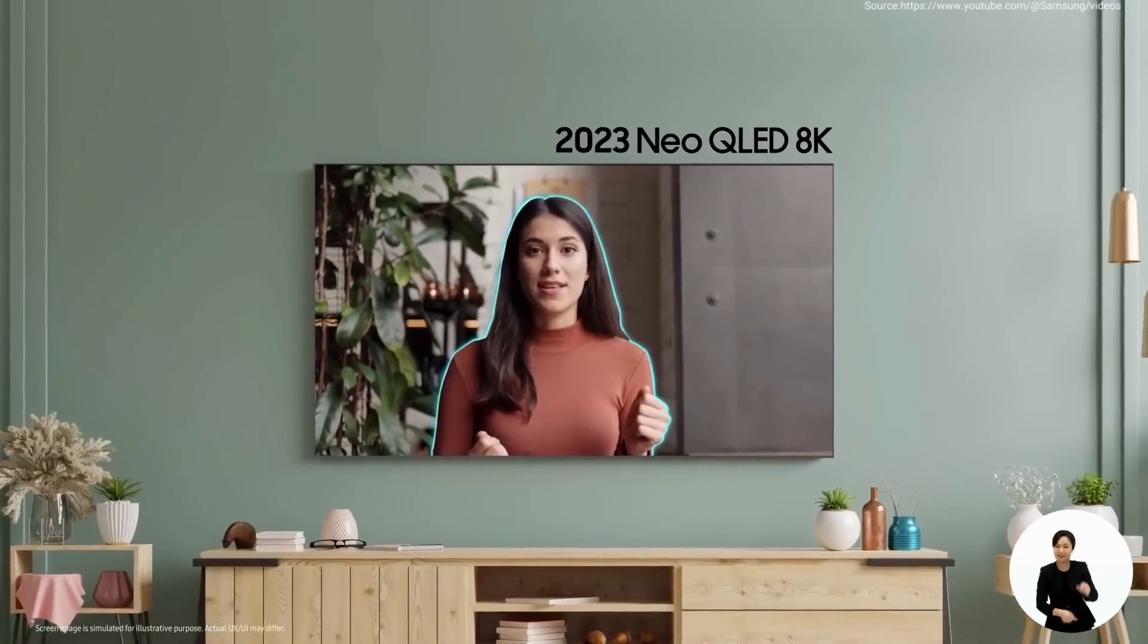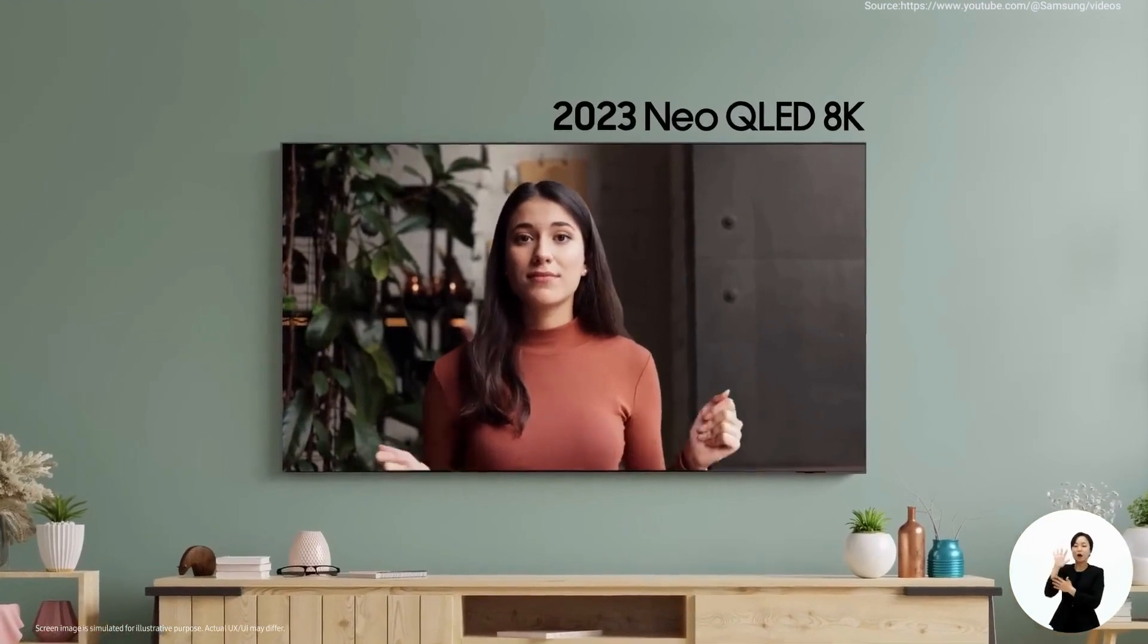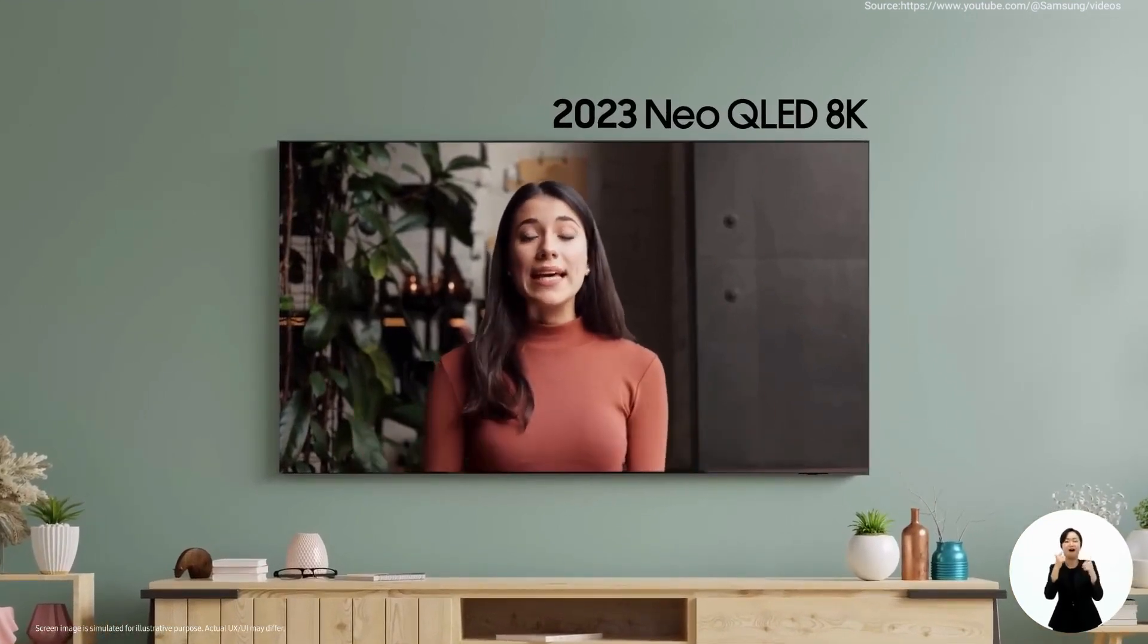We also develop features to help you save electricity while watching TV. AI Energy Mode can even analyze the content playing on the screen and separate the main subject from the background with AI technology to distribute light accordingly. For example, background trees will be dimmed while keeping the main character bright. This helps reduce power consumption without distracting you from the content.